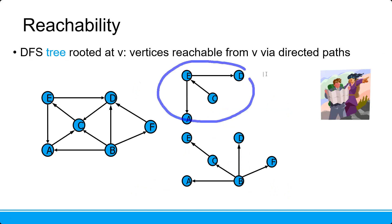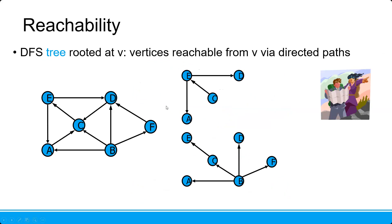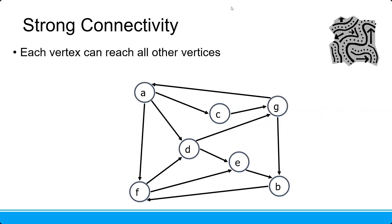This is not strong. Why? Because C is not connected to all other nodes. C only connects to A, E, and T.